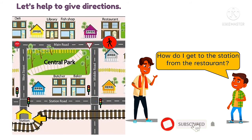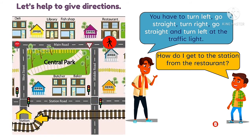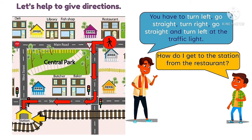How do I get to the station from the restaurant? You have to go straight, you have to turn left, you have to turn left, go straight, go straight, turn right, go straight, go straight, and turn left at the traffic light.